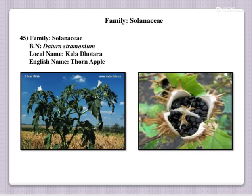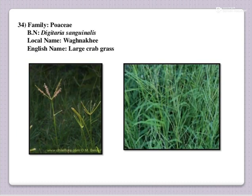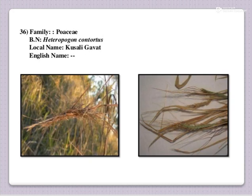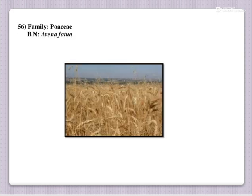This is also a poisonous weed. Next one is Vagnakhi — English name large crabgrass, botanical name is Digitaria sanguinalis, Poaceae family. Next one is Kusuligavat — botanical name is Heteropogon contortus, Poaceae family. And the last one is Avena fatua — this is wild oat and the family is Poaceae. This commonly occurs in wheat fields.